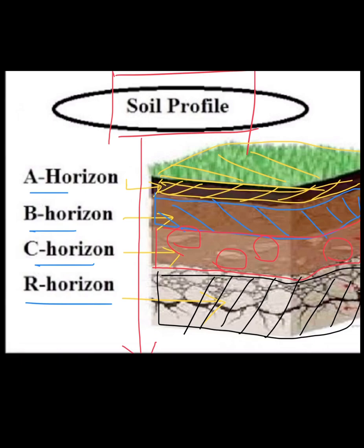The layers are classified from horizon A, horizon B, horizon C, to horizon R. The deeper, thicker, and more well-developed and organized the soil profile is, the more mature and fertile the soil is. This discussion covers the basic understanding and concepts of soil and soil profile. Thank you so much.